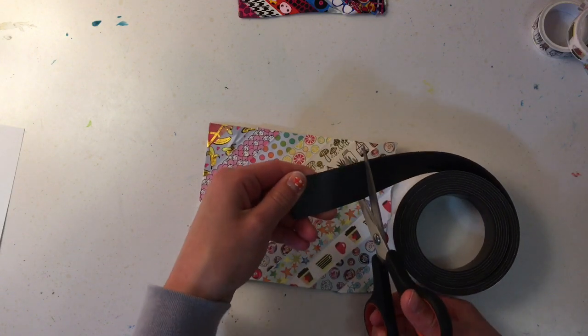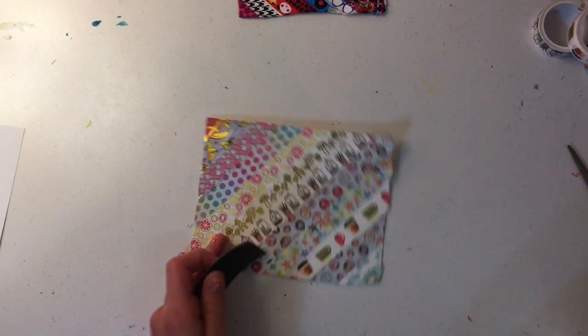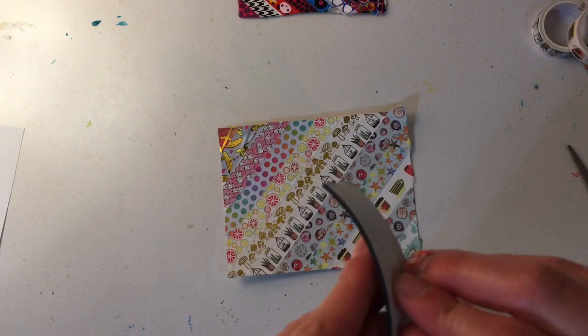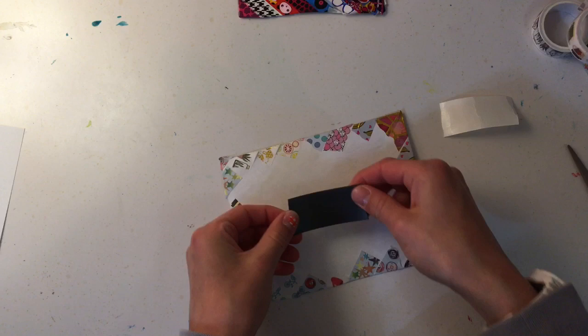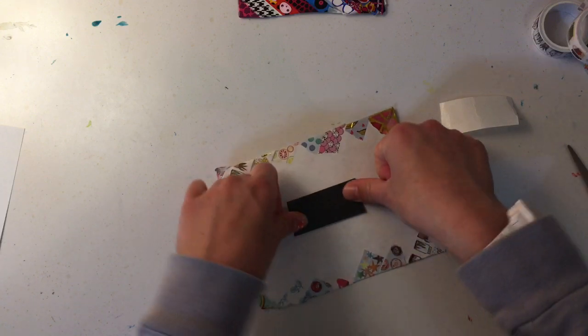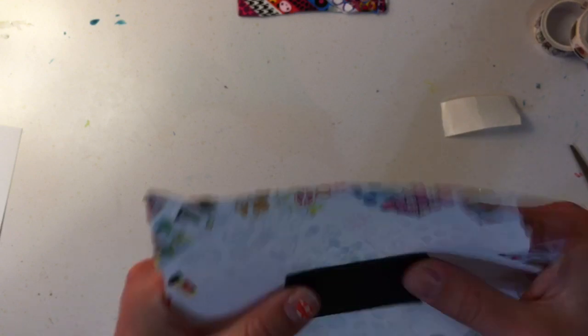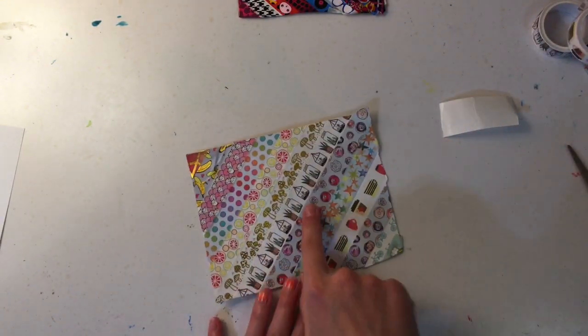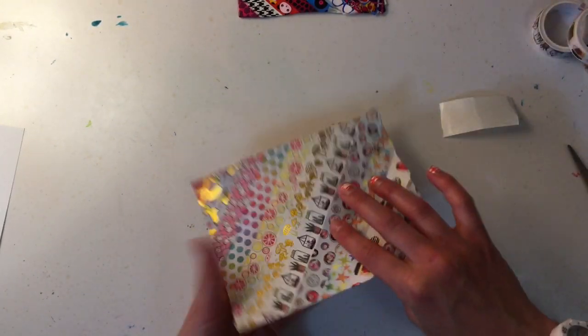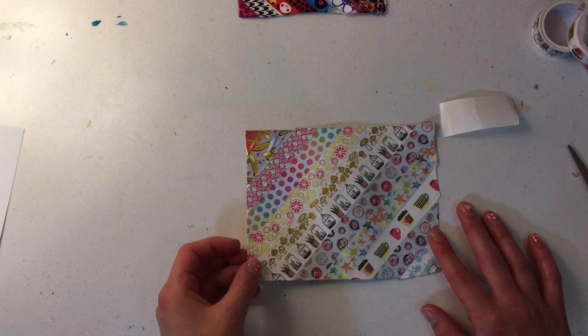So I'm going to cut about this long of magnet. I'm going to take the sticky stuff off and place it in the middle of the paper and it might bend a little but it's still really good. So you can put this like on your fridge or in your locker or whenever you want to put it on. So now it's time for number four.